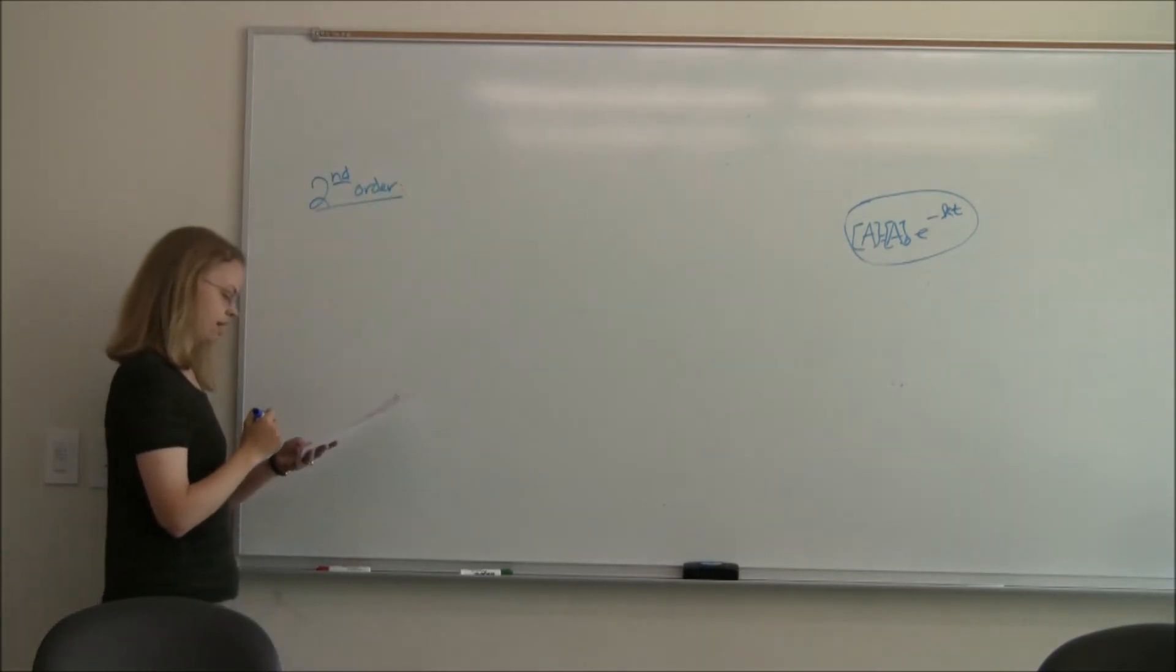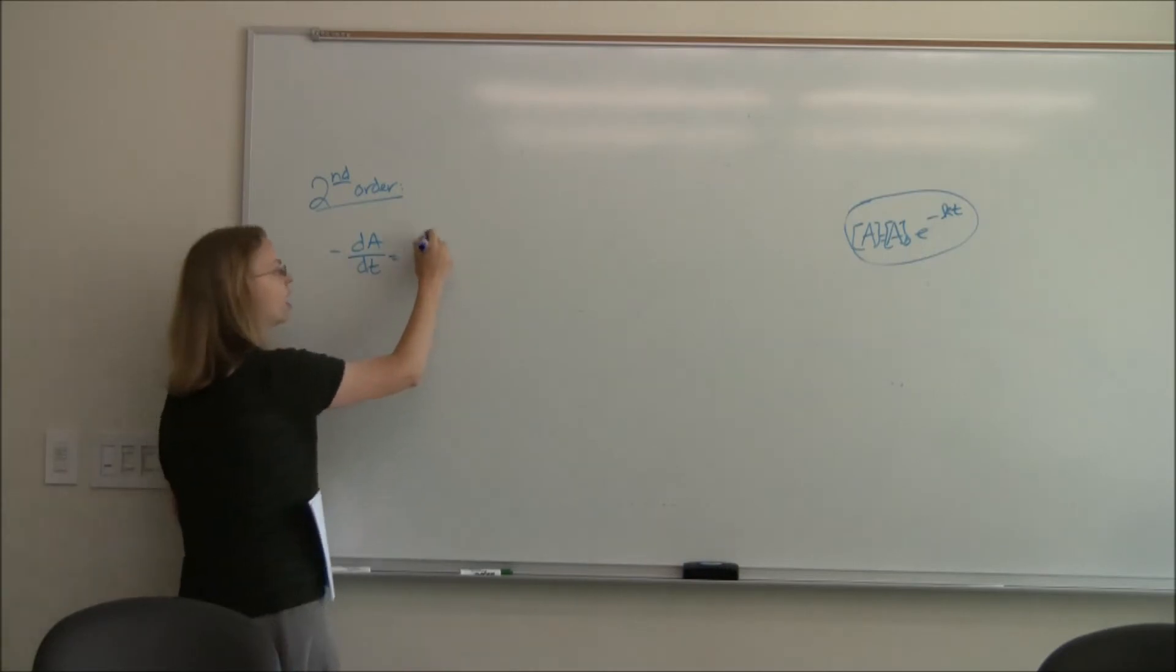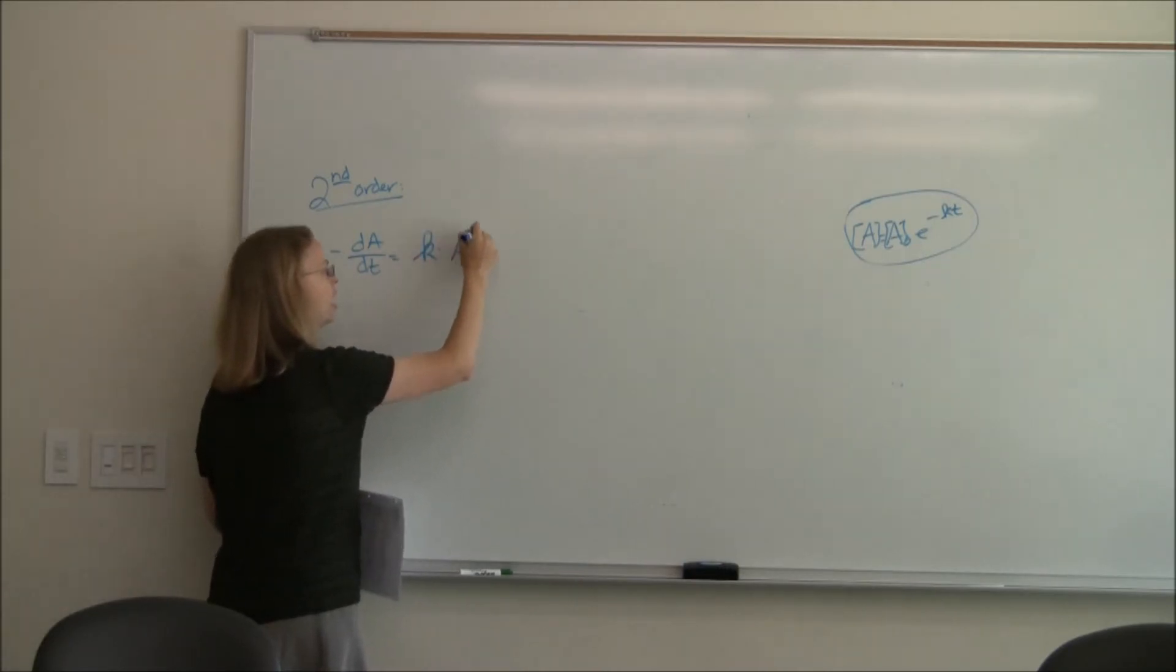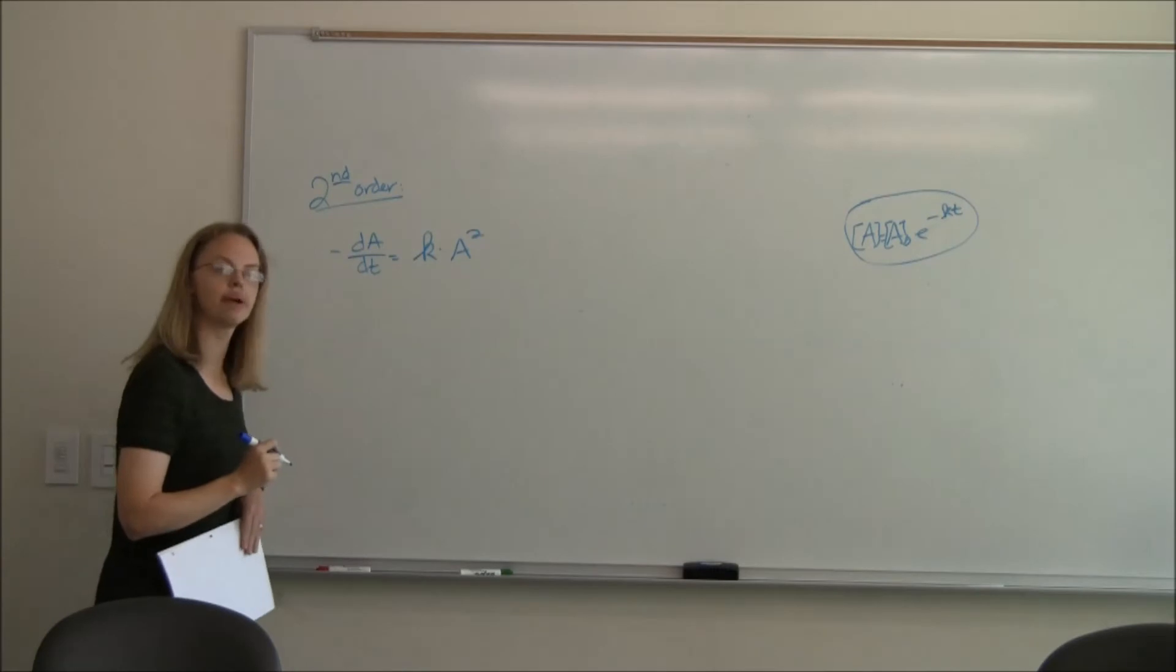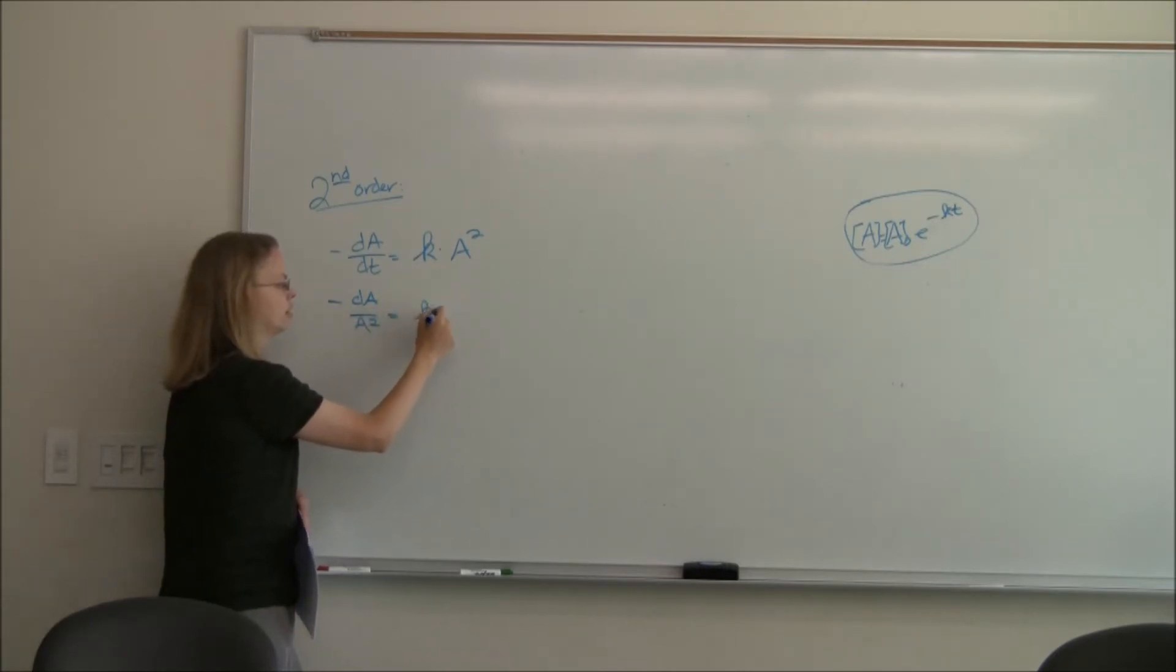So it's an exponential decay over time. So the concentration of A over time decays exponentially. So that's not so bad. First order rate constant. Let's do our second order rate constant. So here's the second order rate constant. Again, minus da, dt. I'm going to quit with the brackets because they're annoying me. Is equal to k times the concentration of A squared.